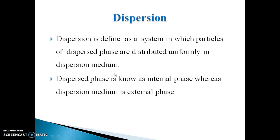Dear Learners, the first thing we should know is: what is dispersion? Dispersion is defined as a system in which particles of the dispersed phase are distributed in a dispersion medium. The dispersed phase is known as the internal phase, whereas the dispersion medium is known as the external phase. These are two important components in the dispersion system. It is a heterogeneous system.